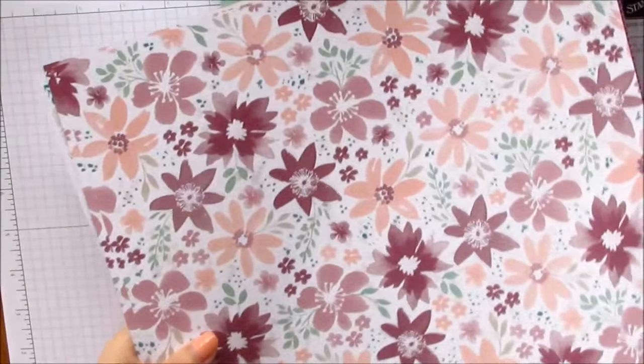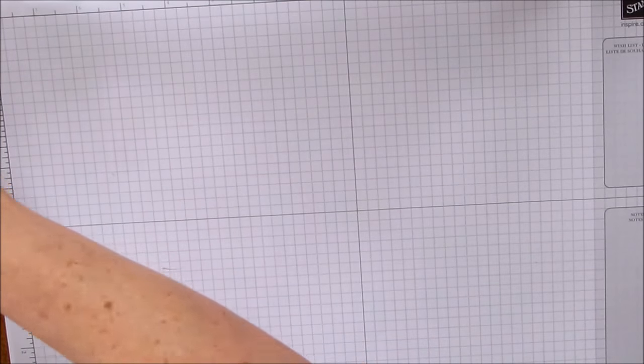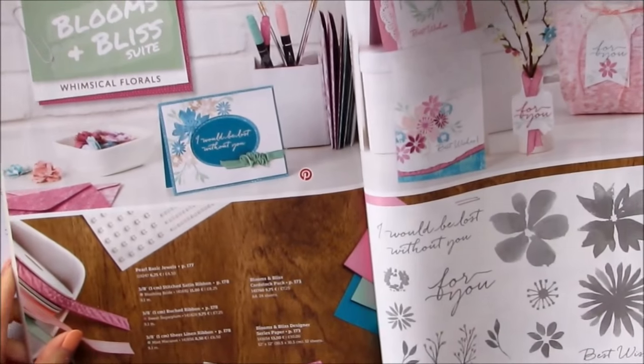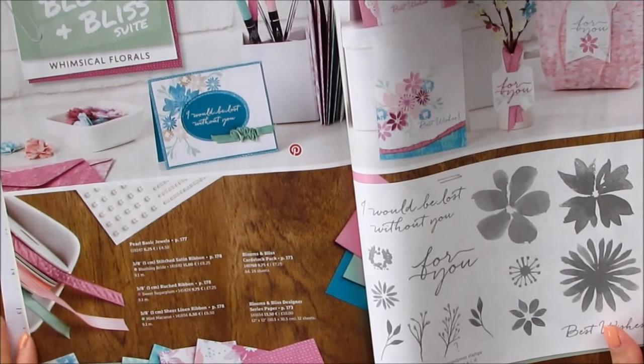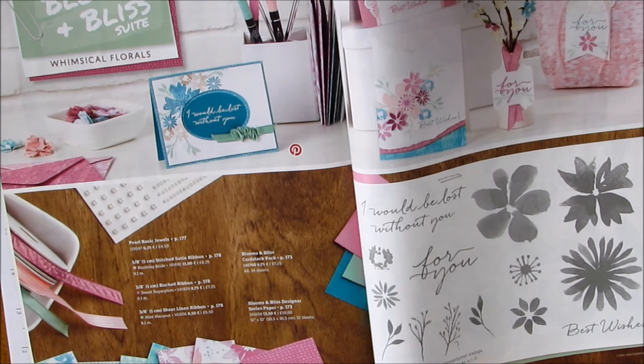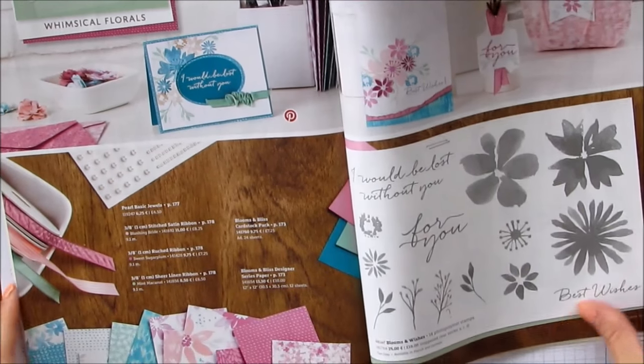And it's in the new brochure. I will show you on page 139. I'll just show you quickly. 139 and like I say, it's Blooms and Bliss Suite. There's your papers along the bottom. Your stamp set. There's some of the little projects that they've made with it so far.